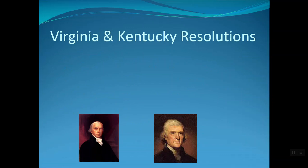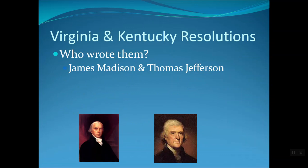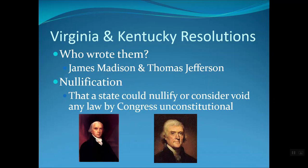In response to the Alien Sedition Acts, we have the Virginia and Kentucky Resolutions, written by James Madison and Thomas Jefferson. Madison is considered the father of the Constitution and one of the authors of the Federalist Papers; Jefferson wrote the Declaration of Independence. Through these resolutions, they introduced the theory of nullification — the idea that a state could nullify, or consider void, any law passed by Congress that it deems unconstitutional.